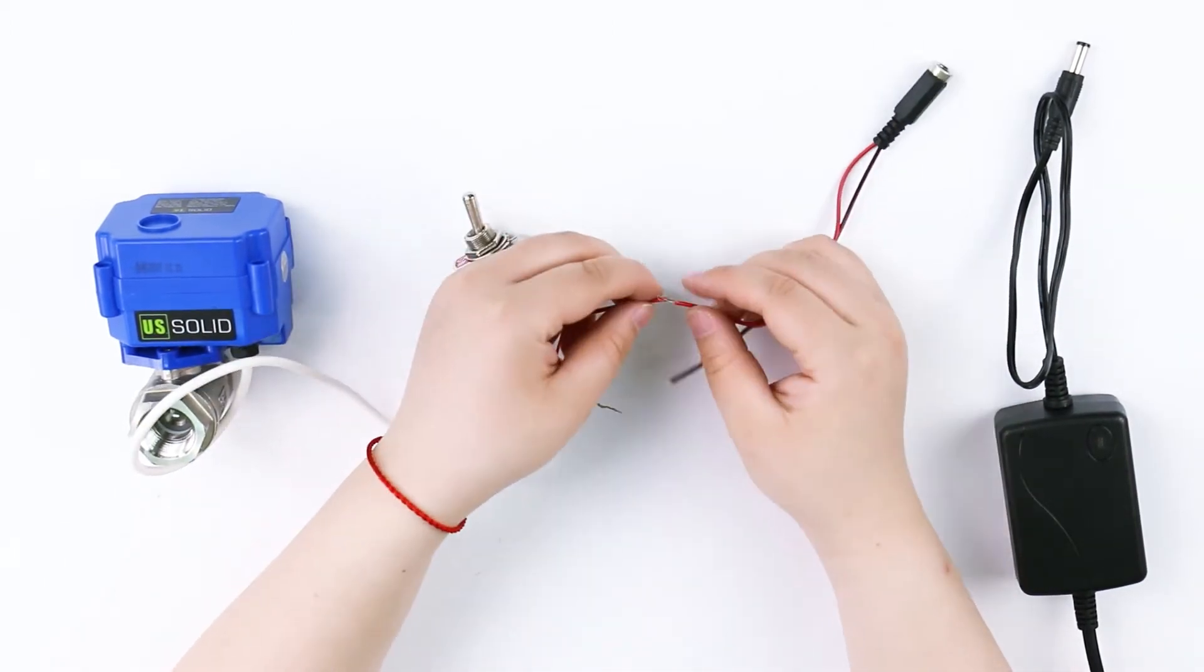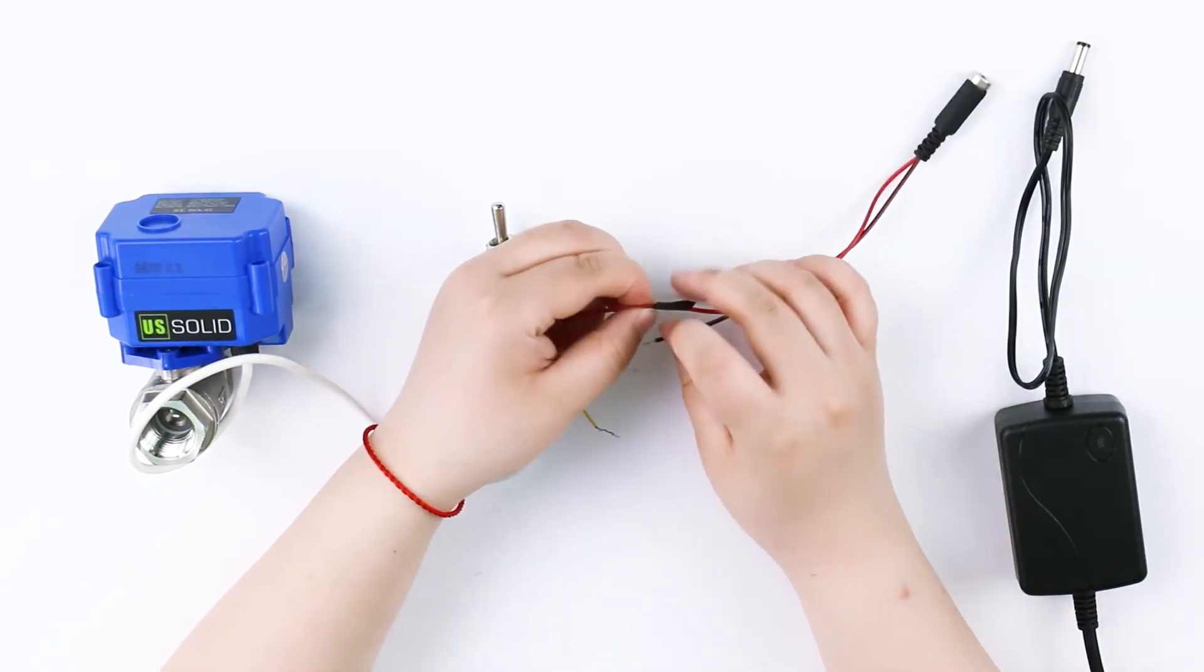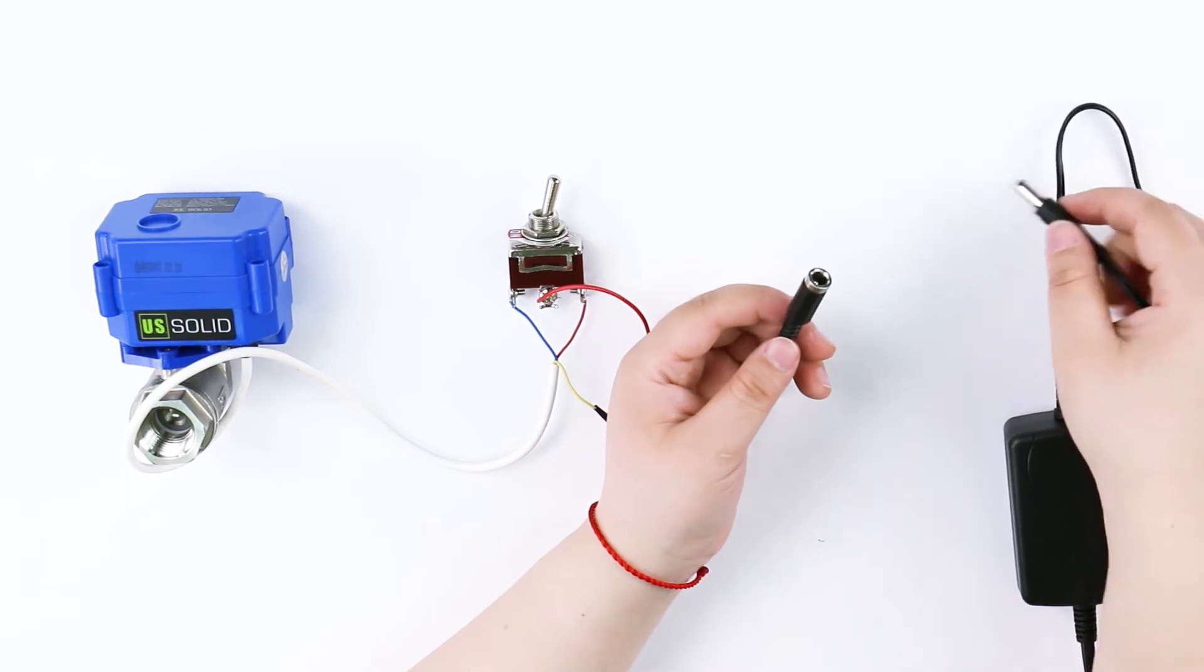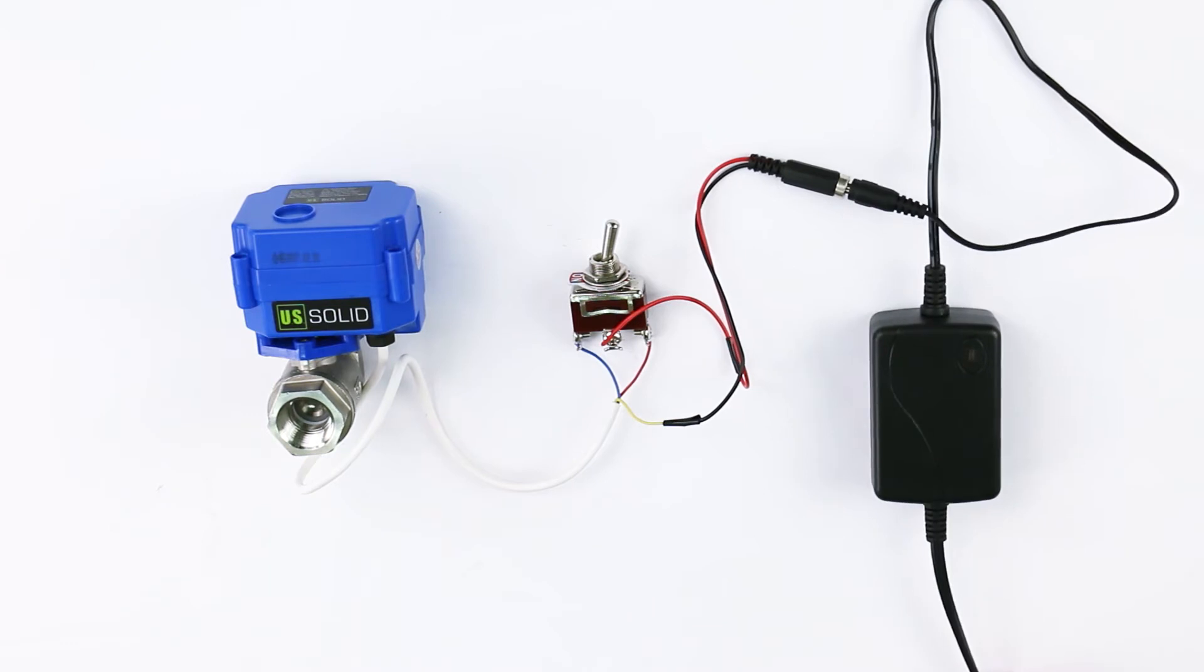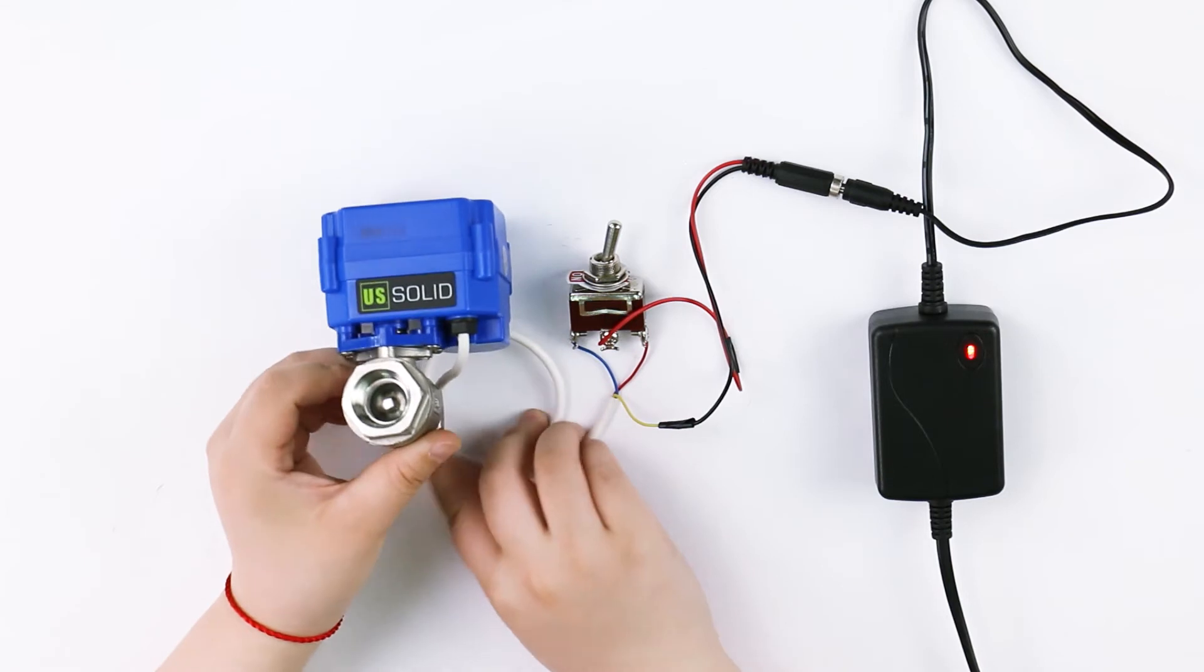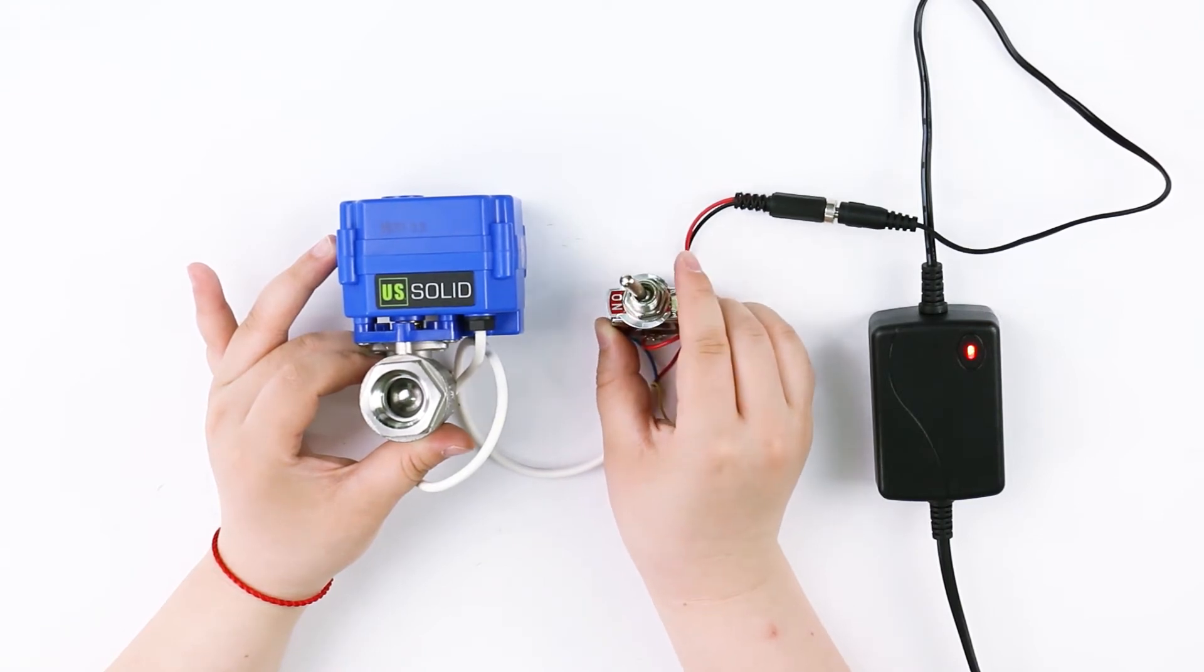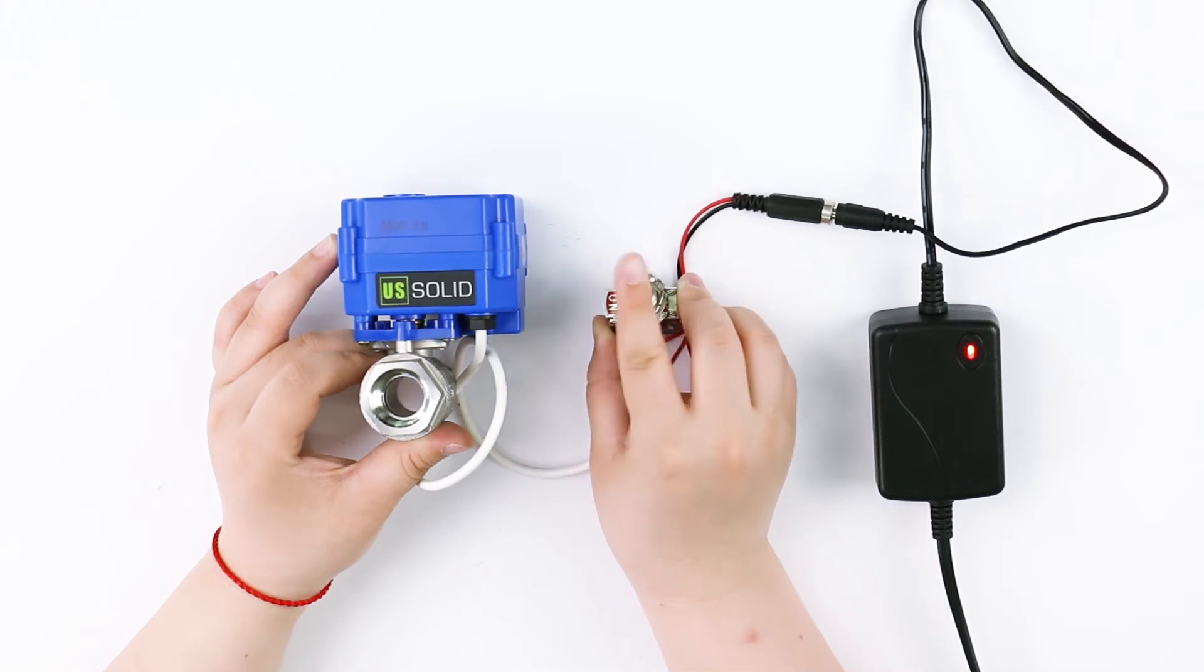Red wire in the middle of the switch is connected to the positive pole and the yellow wire is connected to the negative pole of the DC plug. When the switch is set to open, valve will fully open. When it is set to close, valve will fully close.